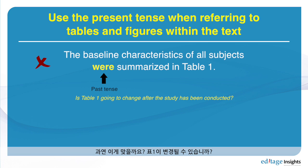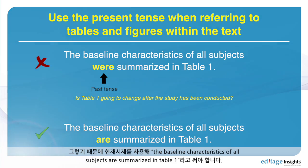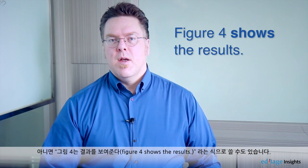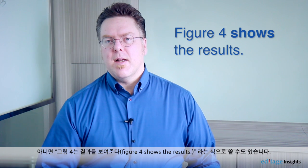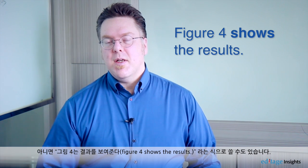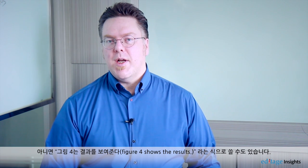Is table one going to change? No — we don't live in Harry Potter's world. So the baseline characteristics of all subjects are summarized in table one, or figure four shows the results. You need to use the present tense when talking about images in your text because they're not going to change.